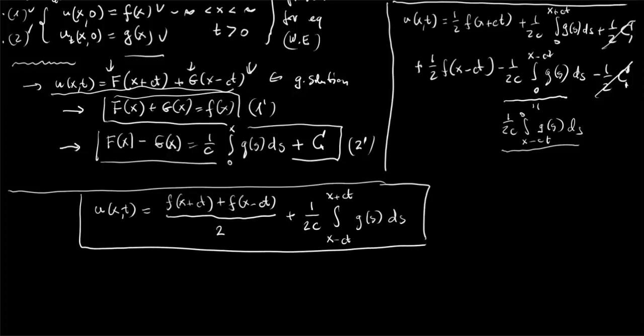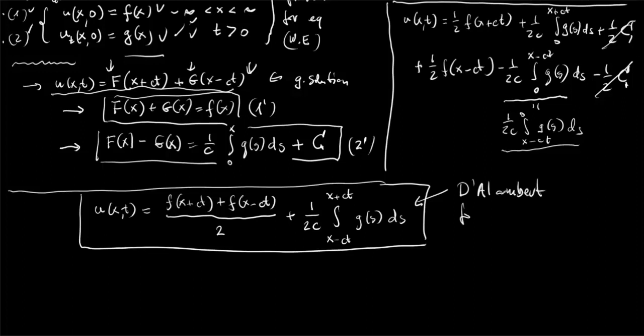This formula is necessary for u(x, t) to solve the Cauchy problem. It is also sufficient: putting t equals 0 gives u(x, 0) equals f(x), and calculating the time derivative and setting t equals 0 gives g(x). Therefore, this gives a unique solution for the Cauchy problem. This formula was obtained by d'Alembert and is called the d'Alembert formula for the Cauchy problem of the wave equation in one spatial dimension.